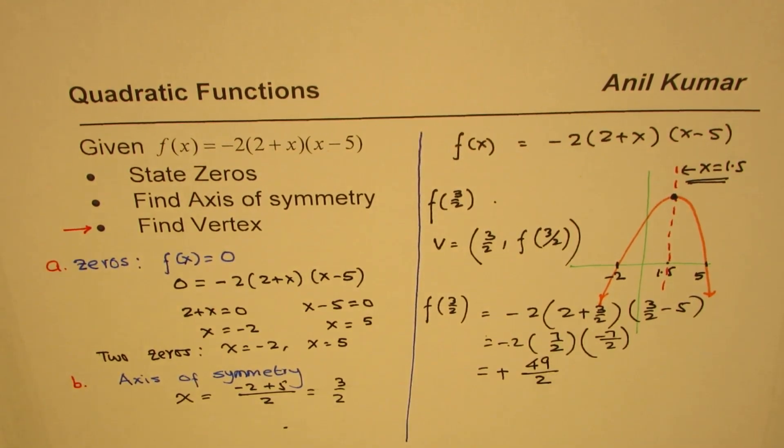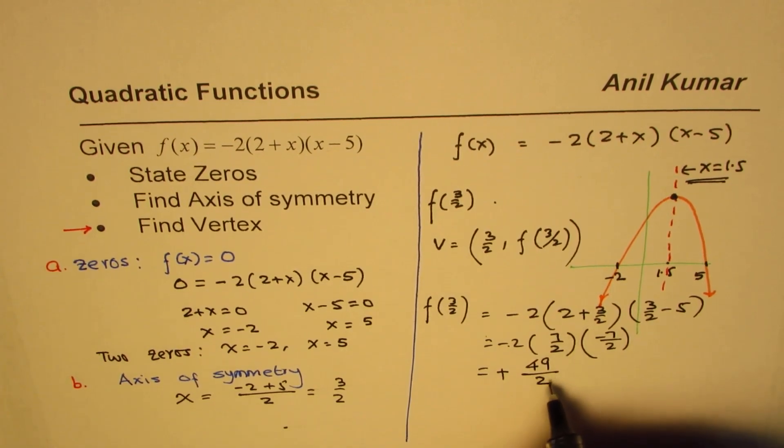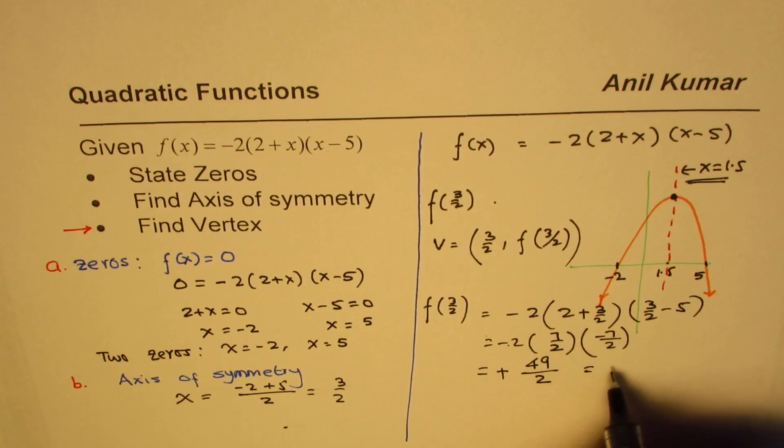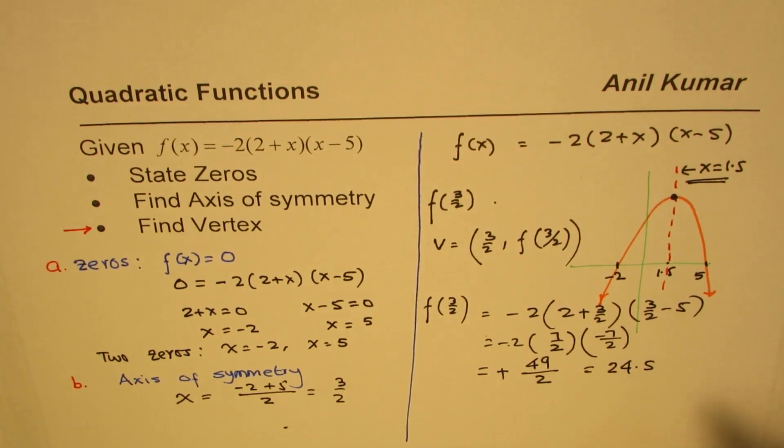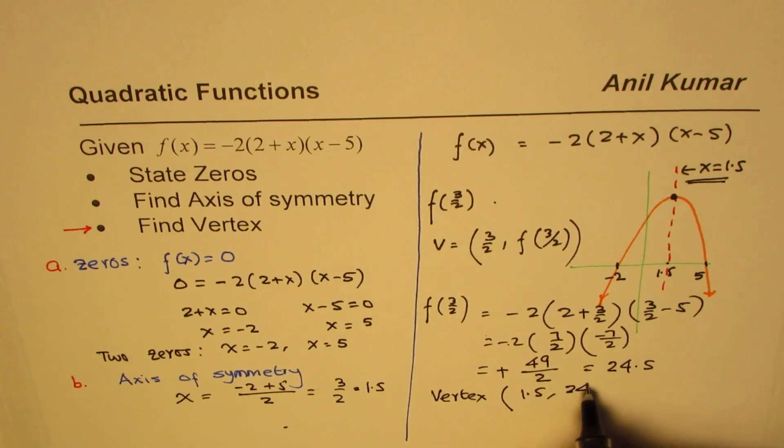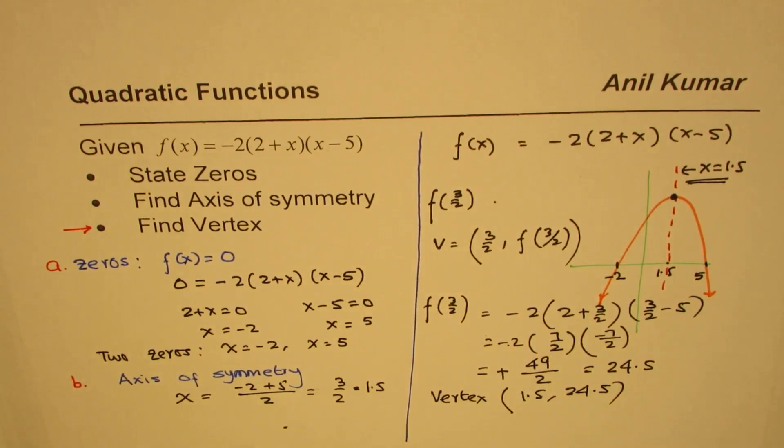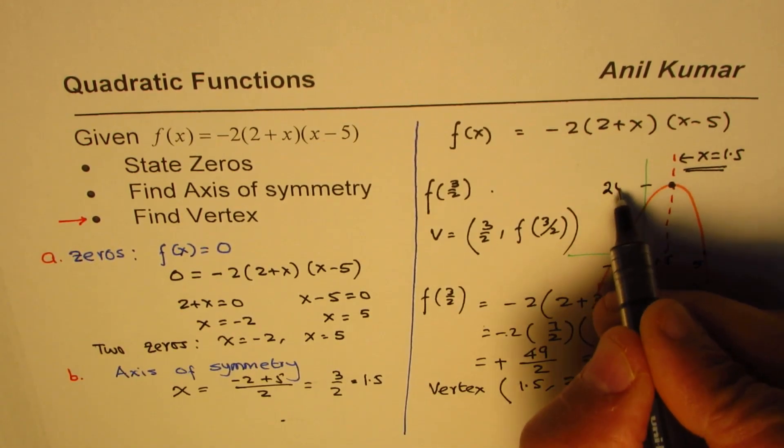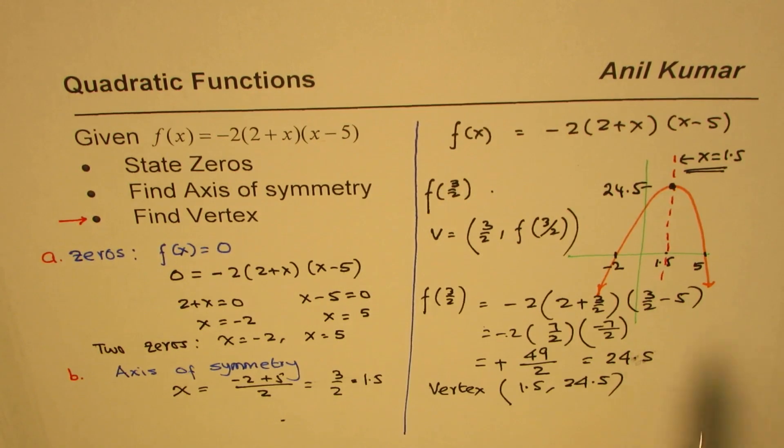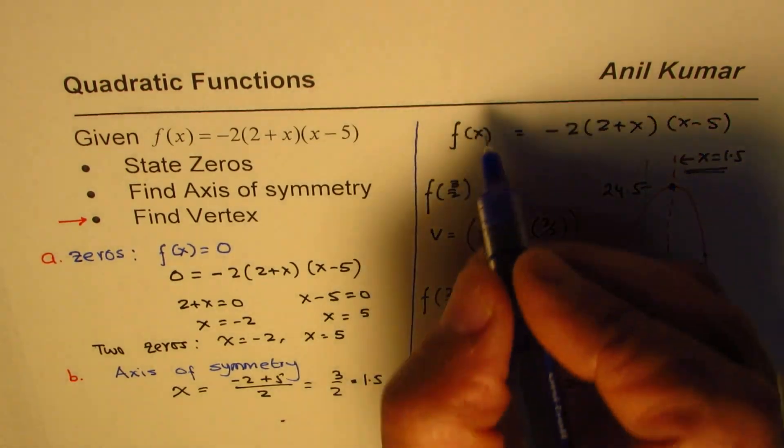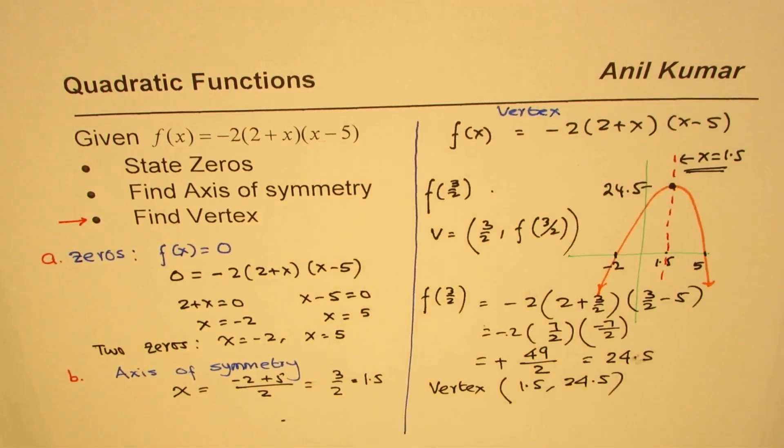49/2 is 0.5 less than 50. We could also write this as 24.5. So we have vertex at 1.5 if I want to write this in decimals, and the y value is 24.5. That's an easy way of finding the vertex. Rather than doing completing the squares and all that, if given in factored form you should find vertex by first finding the axis of symmetry, and then the vertex by substituting the value of x.